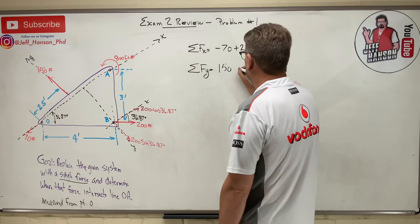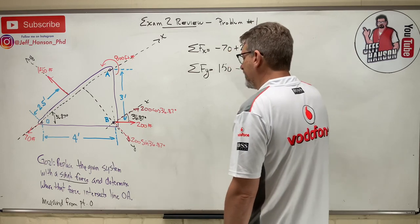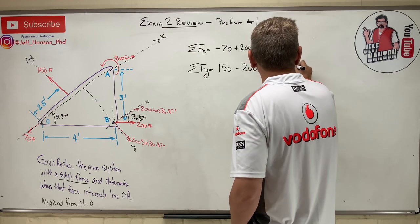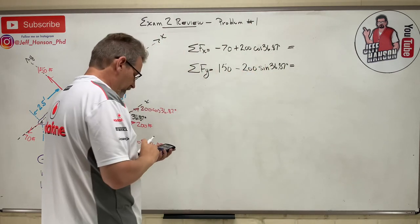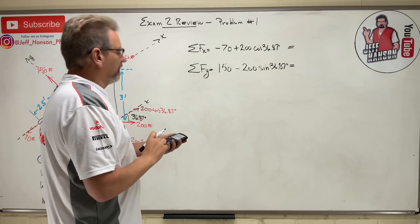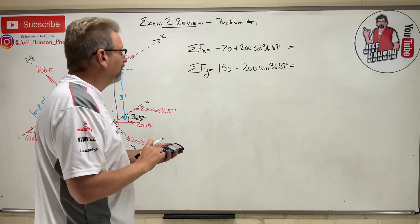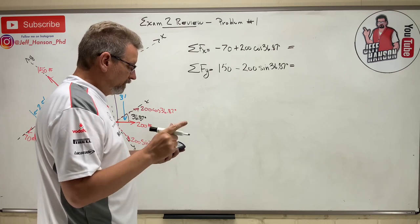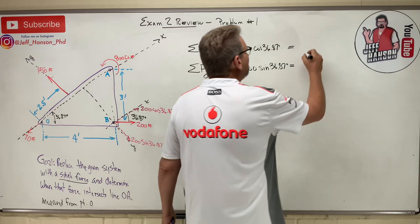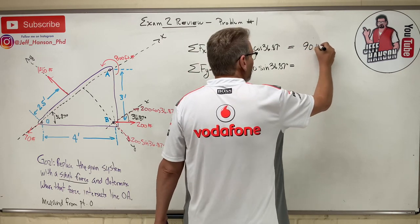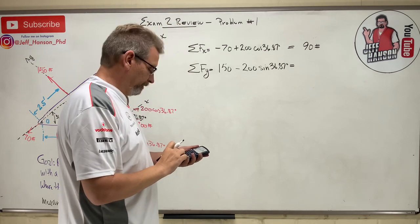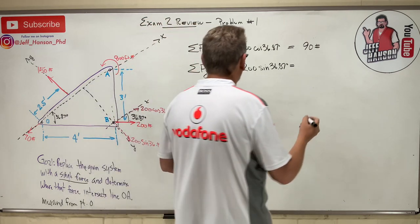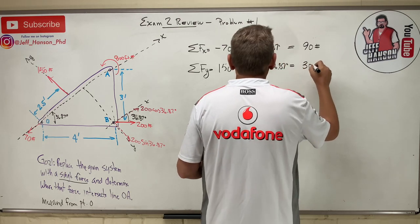Let's do the y. What do I have in the y direction? I've got 150 going uphill, and then I got this guy going downhill, sine 36.87. Let's get these two guys. In the x I have -70 + 200 cos 36.87, which is 90 positive. That's pounds. And in the y I have 150 - 200 sin 36.87, that's 30 positive.